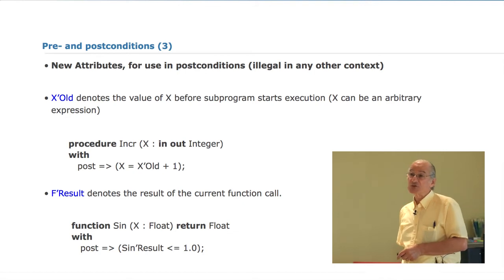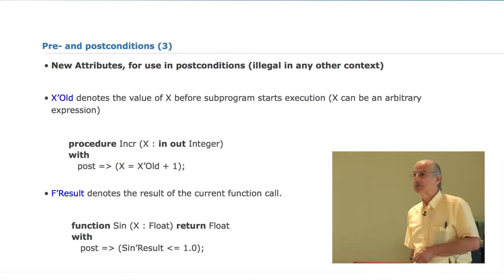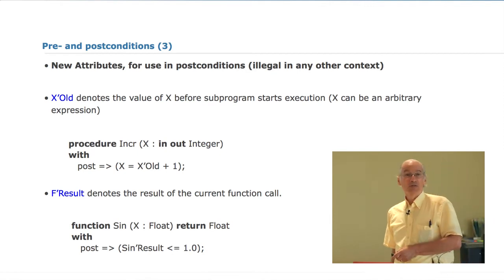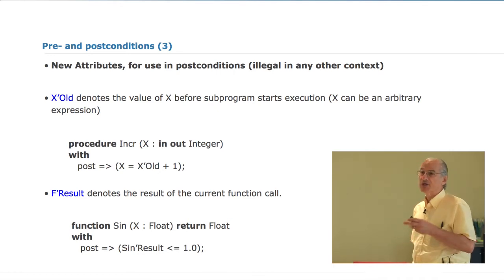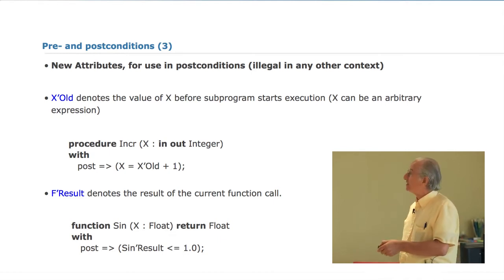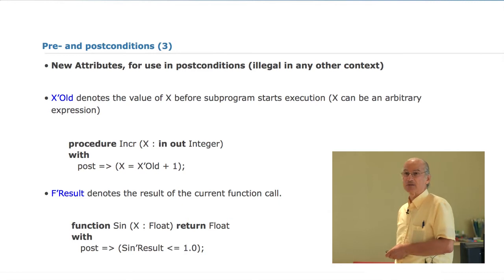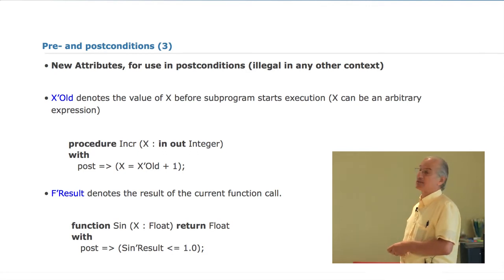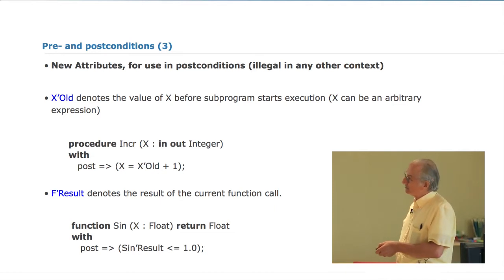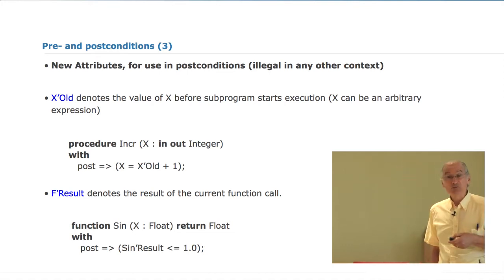Additional machinery is very useful in pre- and post-conditions. For these imperative languages where there is state and things change their value, X'Old denotes the value of some expression on entry to the subprogram. You can use it in post-conditions to compare what happens on entry versus exit. A trivial example: the post-condition could be that x is now X'Old plus one for a procedure that counts. A separate attribute is needed to describe the result of a function — it's X'Result, obviously — and both of these can only be used in post-conditions.